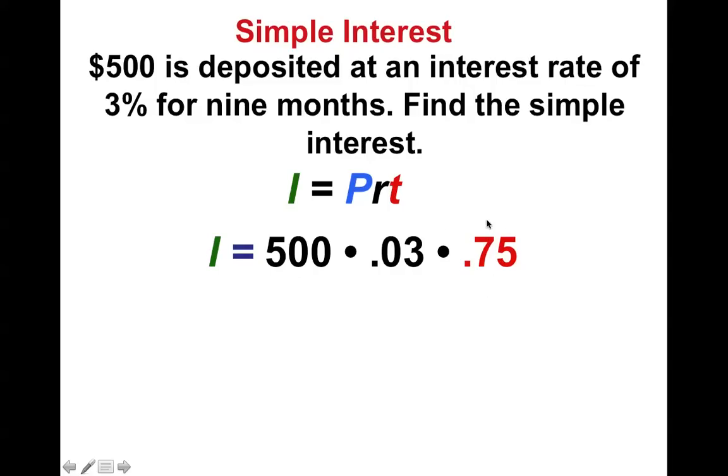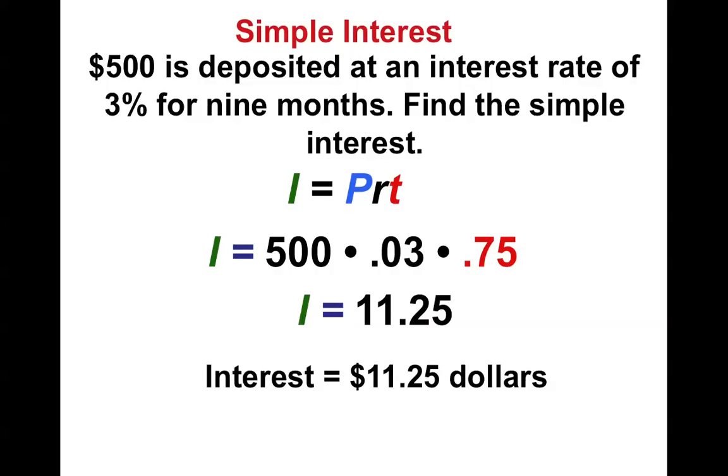That's why I said make sure to notice that T is time in years, and they will try to mess with you with 9 months. Alright, so $500 times 0.03 times 0.75 ends up being $11.25. You don't earn as much money. However, you didn't have to leave the money there as long.